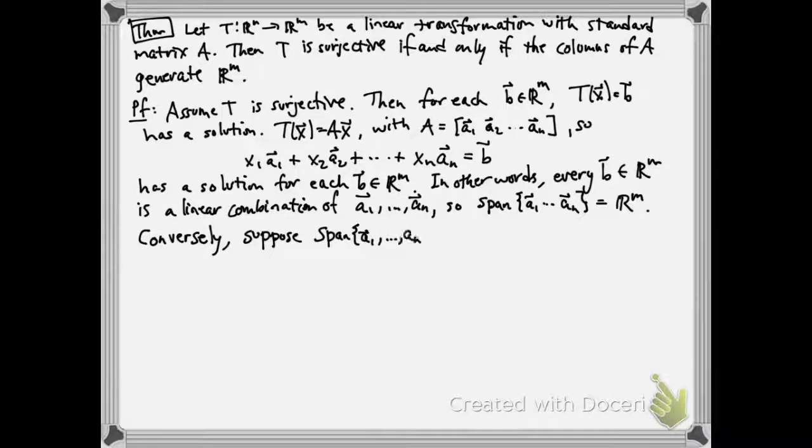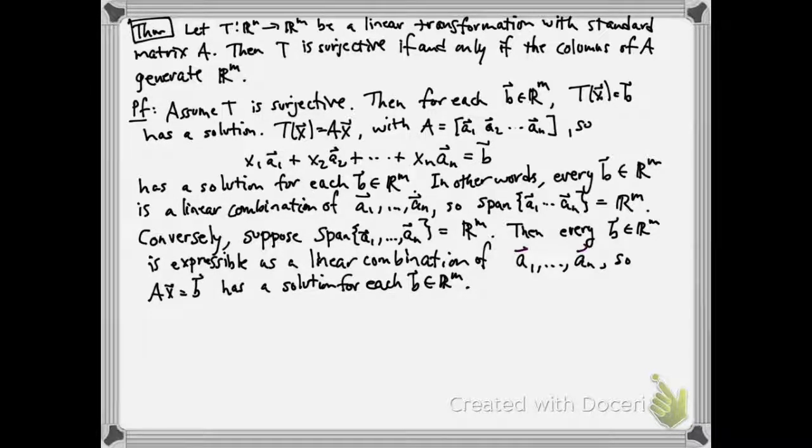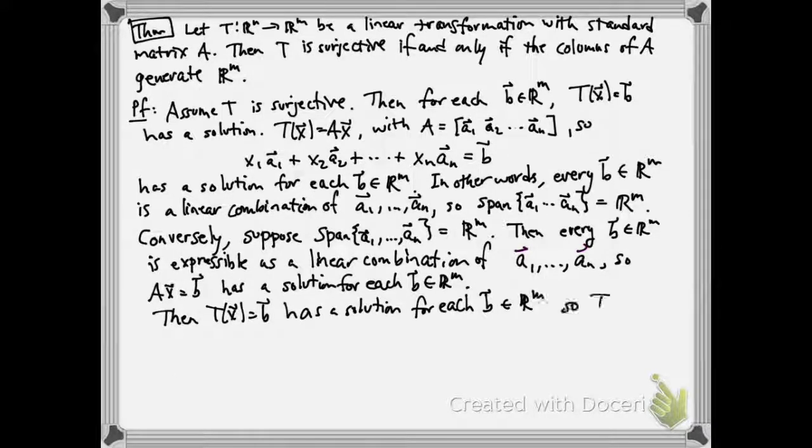Conversely, suppose the span of the columns of A is equal to Rm. Then every vector b is expressible as a linear combination of A1 up to An. And so Ax equals b has a solution for every vector b. Then tx equals b has a solution, so t is surjective.